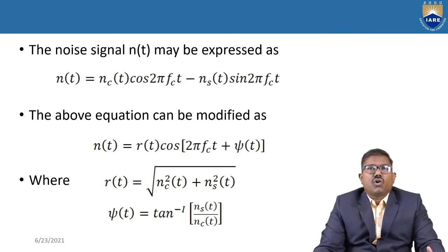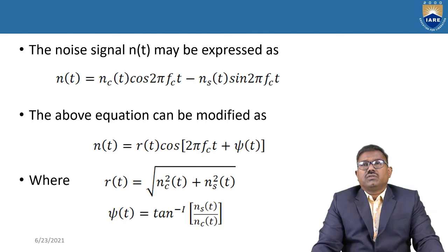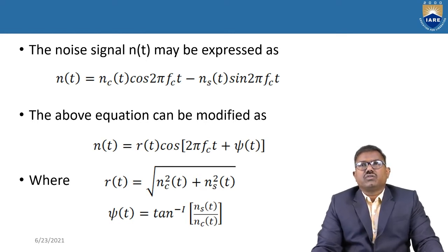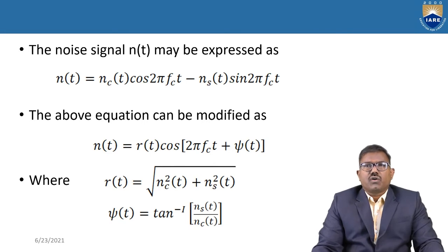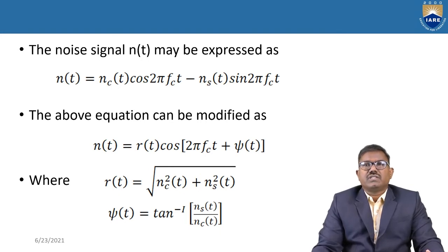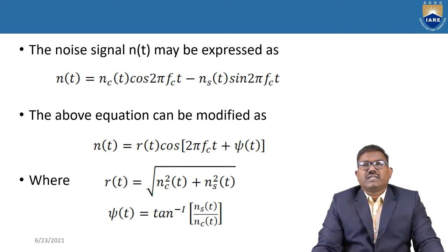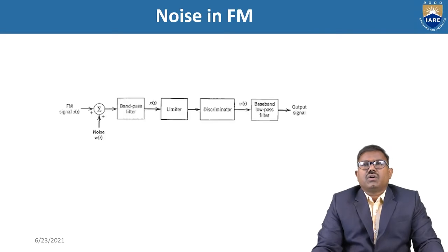We represent N1(t) or Nc(t) for the in-phase component and N2(t) or Ns(t) for the quadrature component. This equation is modified as N(t) = R(t)·cos(2π·fc·t + ψ(t)), representing in terms of amplitude and phase, where R(t) = √(Nc²(t) + Ns²(t)) and ψ(t) = tan⁻¹(Ns(t)/Nc(t)) — the envelope and phase of this narrowband noise. Now, noise in FM.